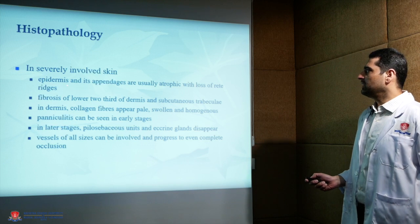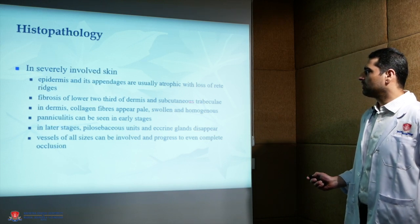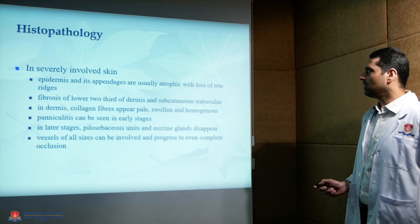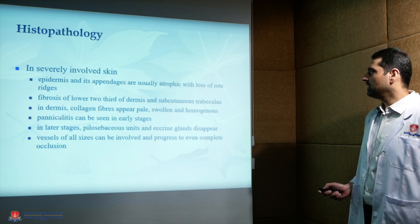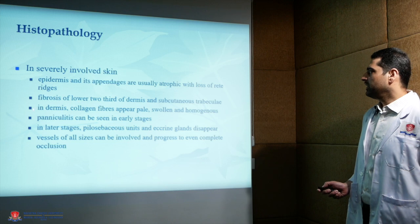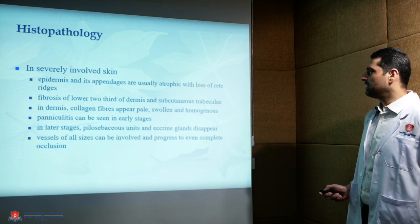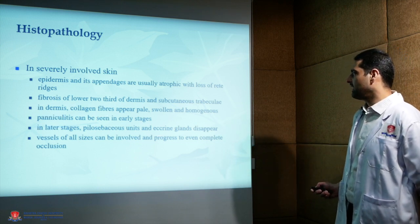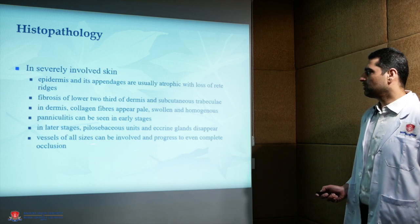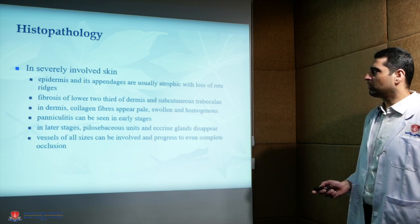On skin biopsy, the epidermis and its appendages are usually atrophic with loss of rete ridges. Fibrosis of the lower two-thirds of the dermis and subcutaneous trabeculae can be appreciated. In the dermis, collagen fibers appear pale, swollen, and homogeneous. Panniculitis can be seen in earlier stages. Later stages show pilosebaceous units and eccrine glands disappearing, and vessels of all sizes can be involved, progressing to complete occlusion.